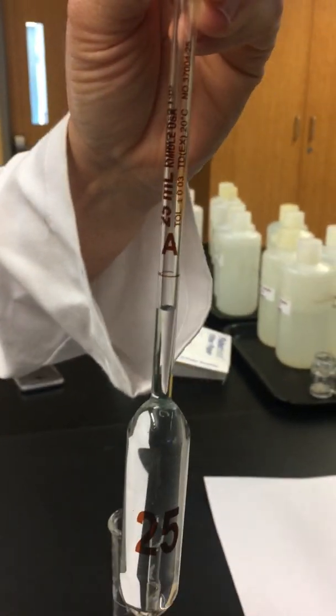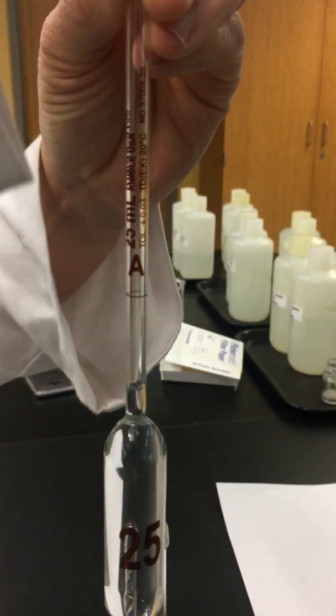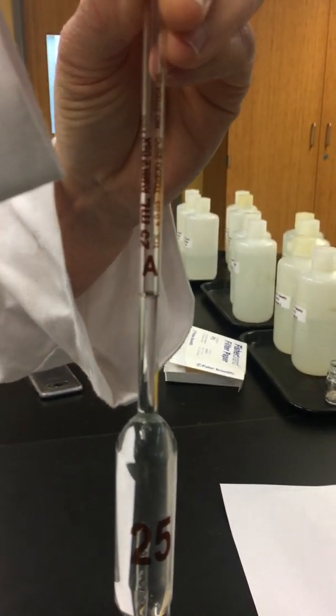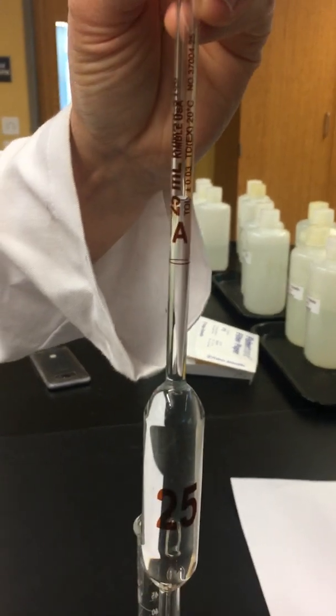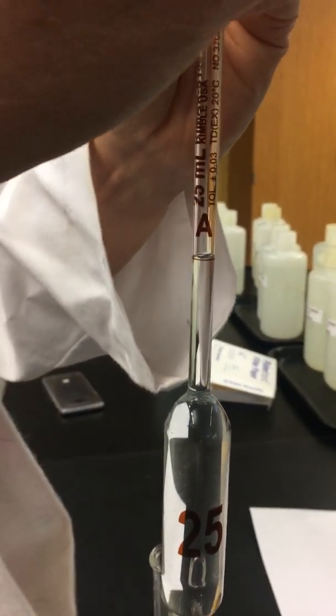So if it happens where you go a little bit below, you just put the pipette aid back on, pull it back up, and try it again. Look at that. So we got it perfect.